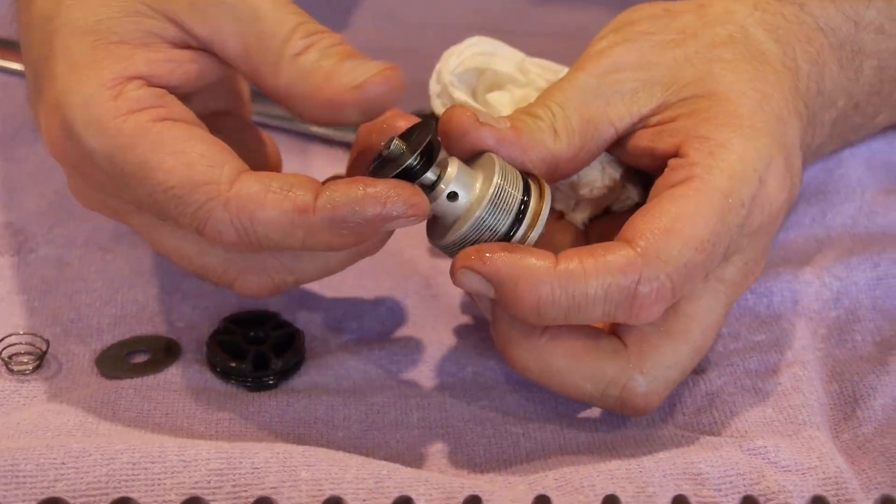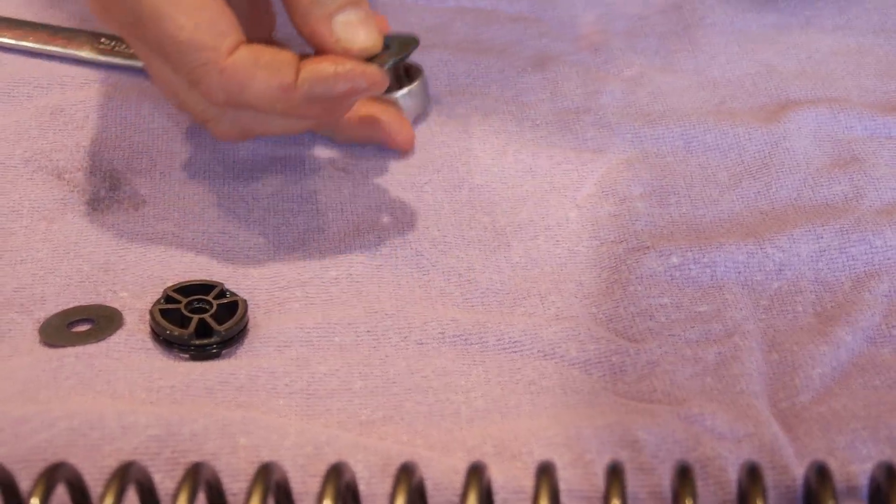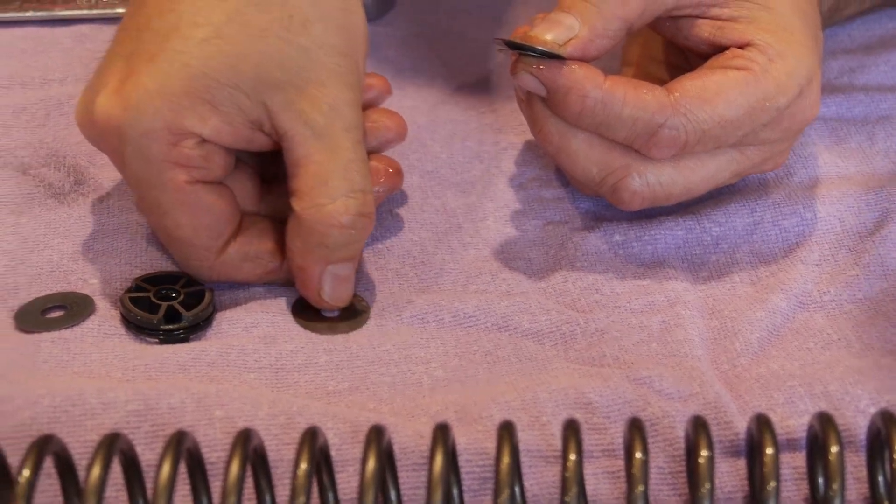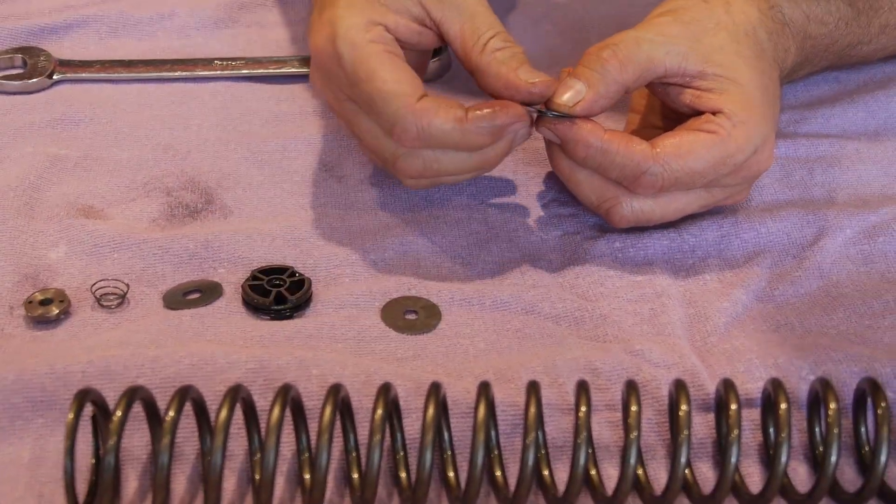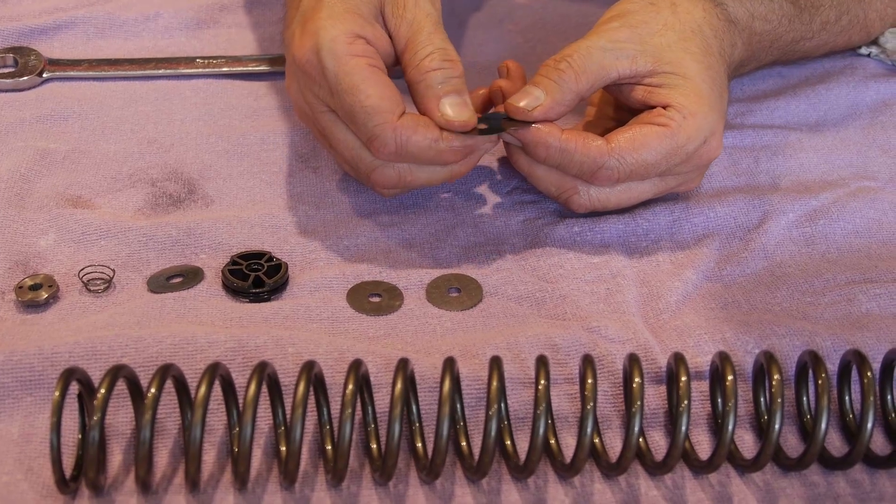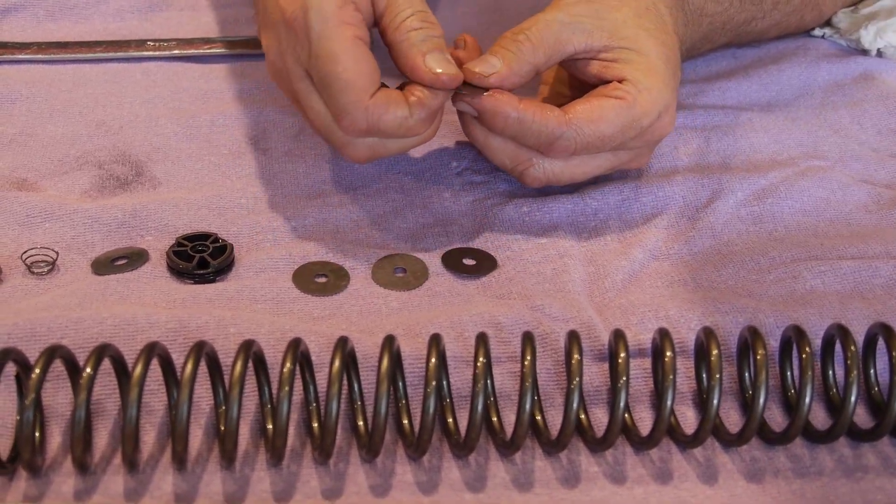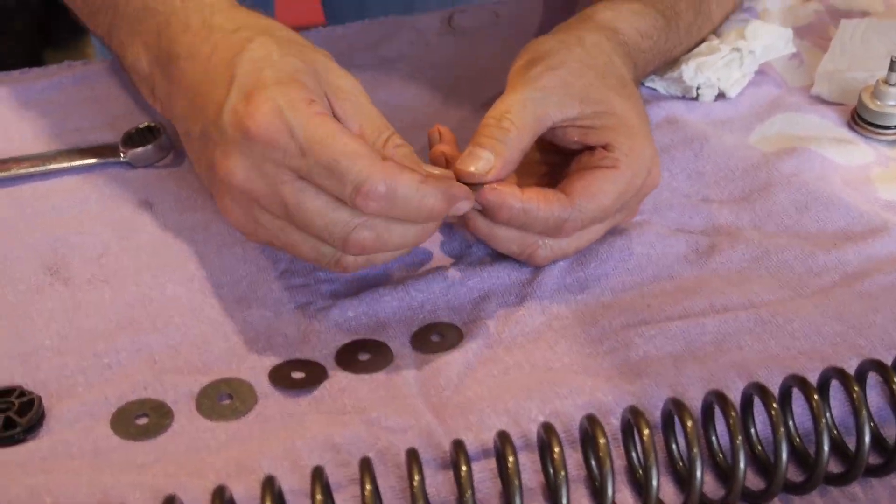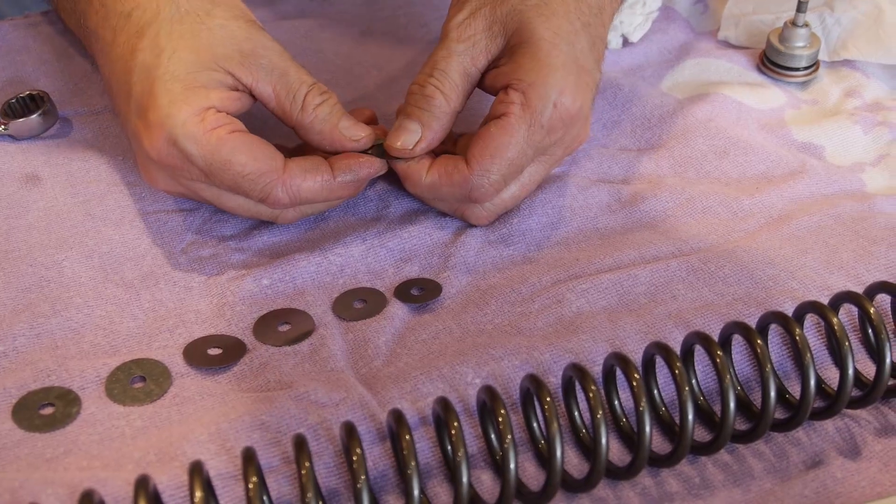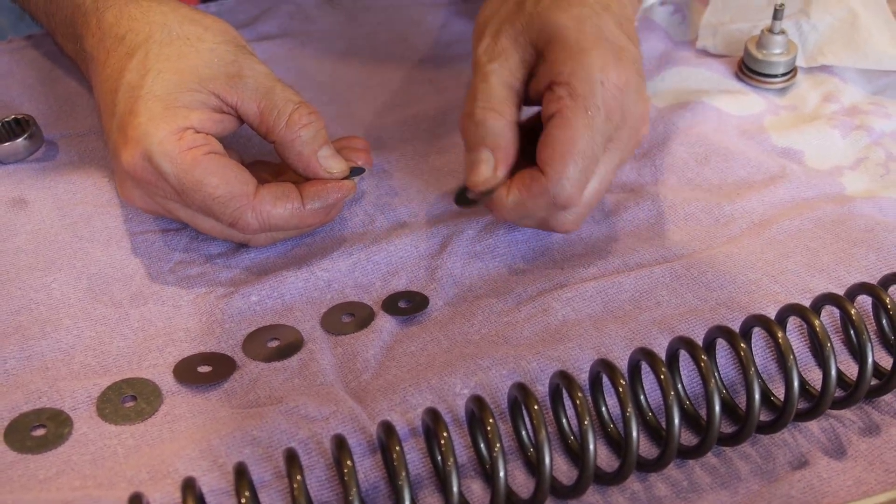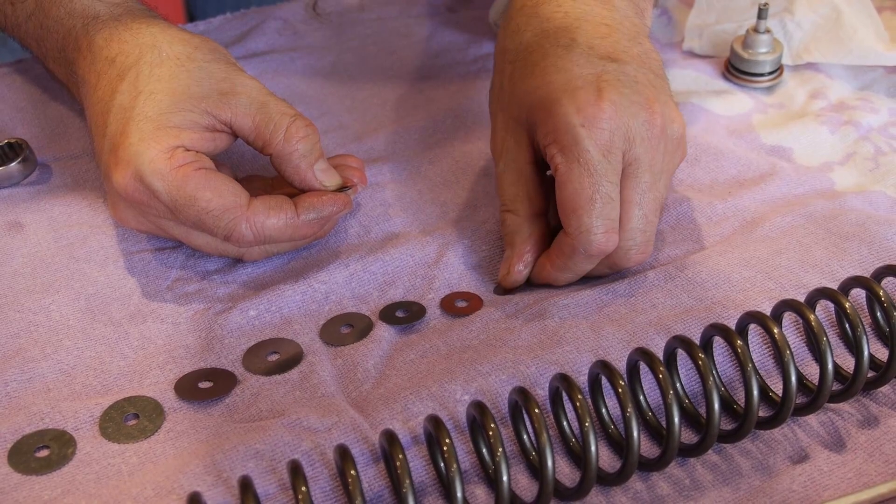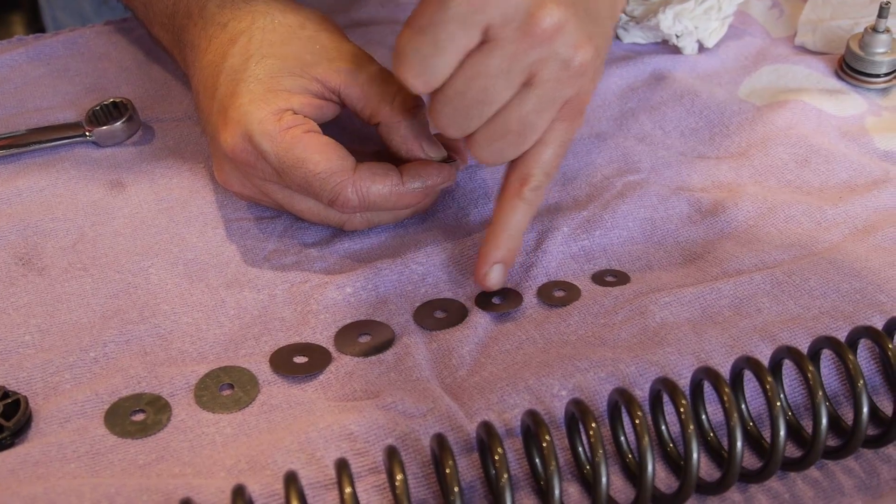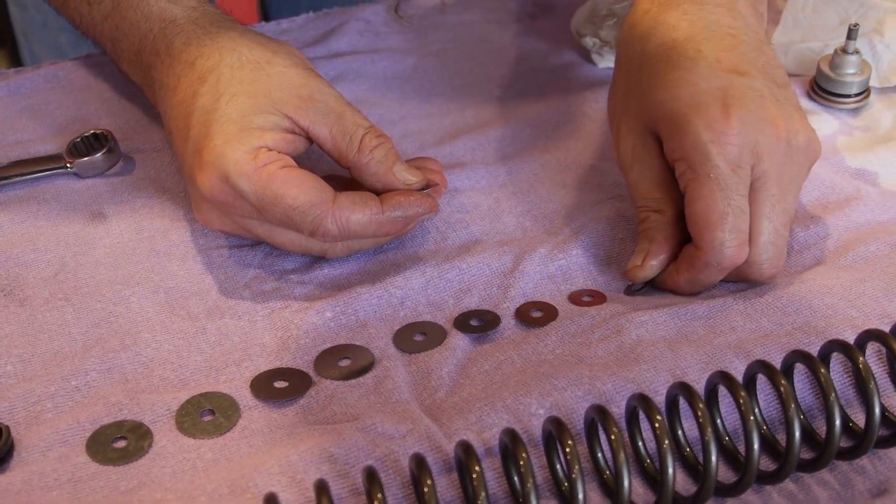And then here are the shims. And when you take your shims off, what you're going to do is you're going to lay them out. Take one off at a time. This is low speed compression. These large initial shims. Put them in order. Now we're getting into high speed compression when they're starting to taper. This is what's called a single stage stack. There's not a crossover. A crossover means that there might be a bunch of big shims and then a small one and then a big one again and tapering down. That's what's called a two stage.